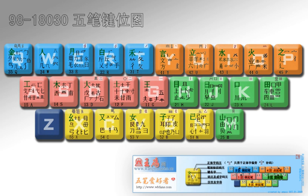Chinese input methods predate the computer. One of the early attempts was an electro-mechanical Chinese typewriter, Ming Kuai, which was invented by Lin Yutang, a prominent Chinese writer, in the 1940s. It assigned 30 base shapes or strokes to different keys and adopted a new way of categorizing Chinese characters. But the typewriter was not produced commercially and Lin soon found himself deeply in debt.